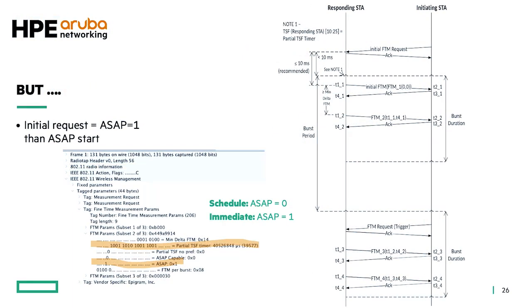There is also an ASAP field — which I couldn't find for a long time, but it simply means 'as soon as possible.' It means you can either start immediately or schedule and delay the session based on timing. Most of the time in practice it's set to one, meaning you start the negotiation immediately. But there is an option in the standard to time-schedule this.